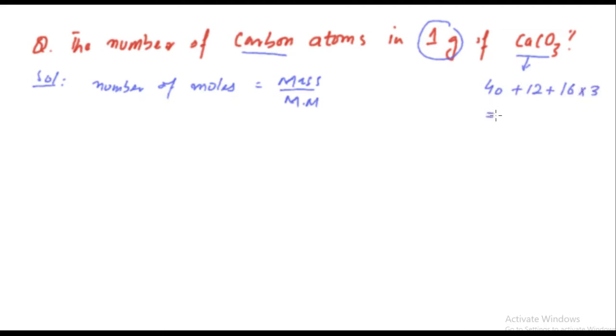After adding and multiplication, we will get 100 gram per mole. Mass is given, molar mass we have found out, so we put these values in this formula. Mass in grams is one gram, molar mass is 100 gram per mole. This gram will cancel out and we will get 0.01 mole.